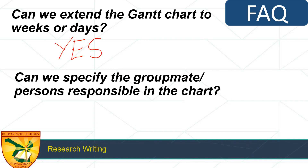Next question: can we specify the group members or persons responsible in the chart? Yes — we actually did this in the Gantt chart for our core shelter project where there were four of us: Ma'am Lili Malabo, Sir Jack, myself, and Dean Julius. Within the Gantt chart, it is color coded — if colored yellow, the researcher responsible is Ma'am Lili; if colored green, the person responsible is Sir Jack, and so on. You can do that too.